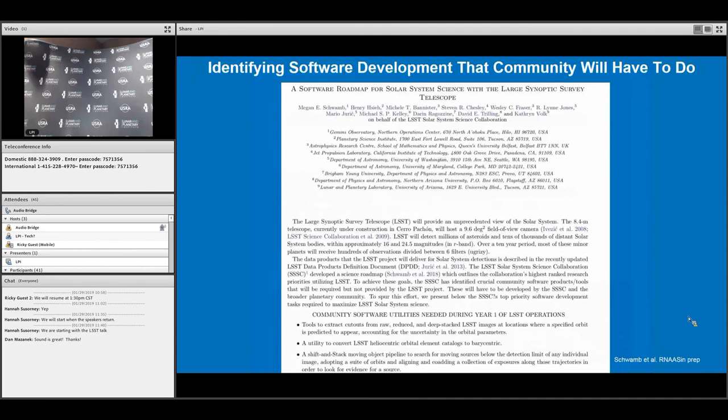What do we do with this science roadmap? We're trying to go from these are the things we think are most important that LSST will be unique at, to actually getting those results and data points. We identified with a software development roadmap what things the community needs to build that are not going to be built by LSST project.